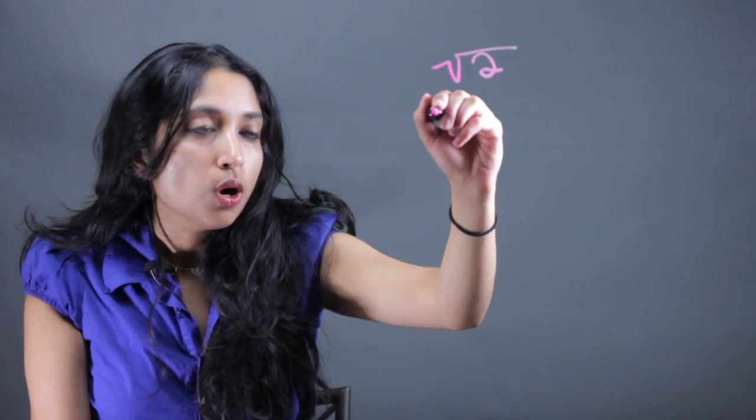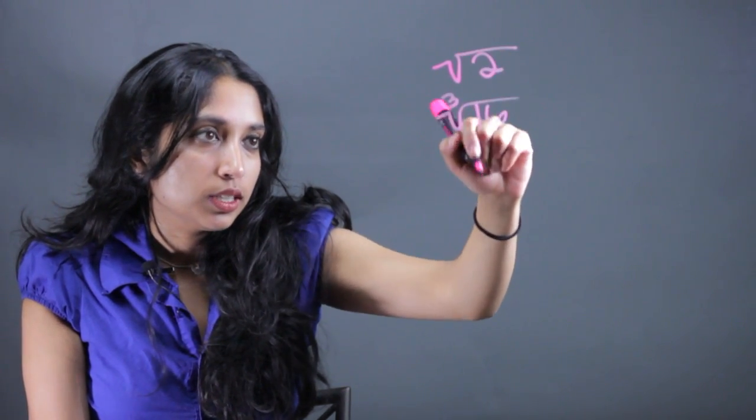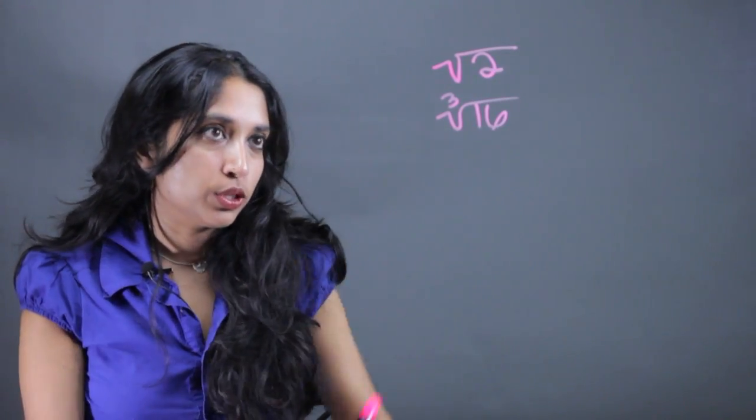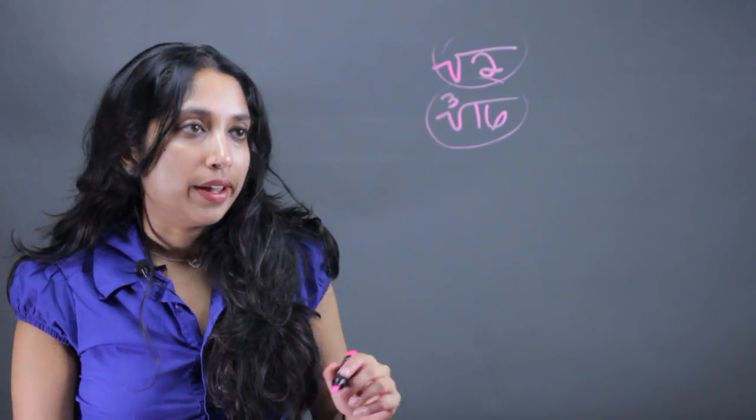And just to give you a quick example of a radical, a radical is an irrational number that has a root in it. For example, the square root of 2 or the cubed root of 16, different things, or it can be the cubed root of 8 which would just give you 2. This is what a radical is.